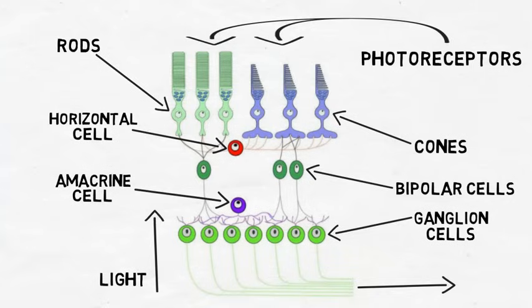Amacrine cells receive signals from bipolar cells and are involved in the regulation and integration of activity in bipolar and ganglion cells.